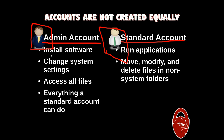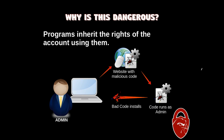As the boss, he can install software, he can change system settings, and he can also access all files on the computer — including files that belong to the office worker. In addition to all those, he can do everything that a standard account can do. Our little lonely office worker here can only run applications and basically move, modify, and delete files that belong to him, and those are typically going to be in non-system folders.